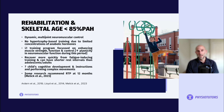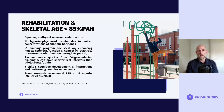Considering skeletal age: if a child is under 85% of their peak height — meaning they haven't really started their growth spurt or puberty — we want to focus on dynamic multi-directional neuromuscular control. There's no need for hypertrophy-based training due to limited concentrations of anabolic hormones. Watch out for patients who are lifting weights or doing 3 sets of 15 to 20 reps — they won't be physiologically adapted for that type of exercise.